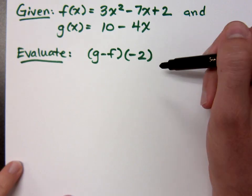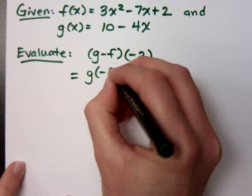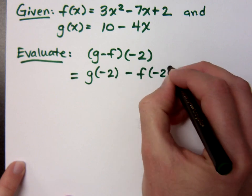And if I say g minus f of negative 2, that means, using proper notation, that means g of negative 2 minus f of negative 2. Do you all agree with that? Yes.